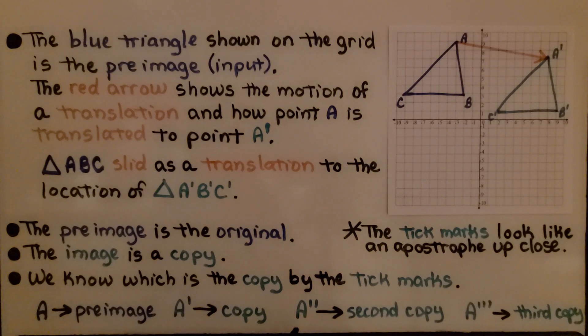We can have an A with two tick marks to show that's the second copy. We have a copy and then a copy of the copy, and then an A with three tick marks to show it's the third copy.